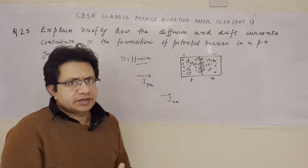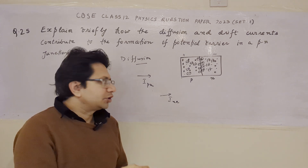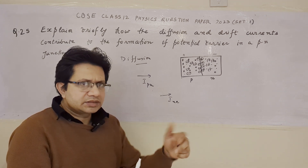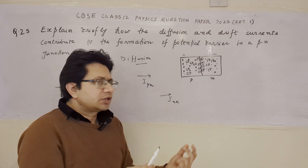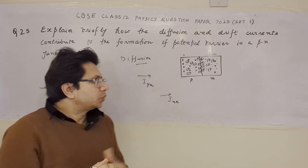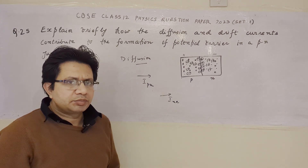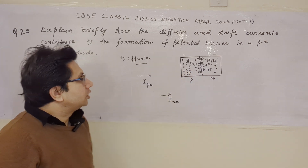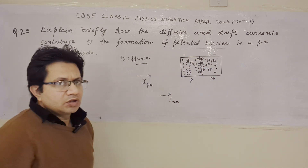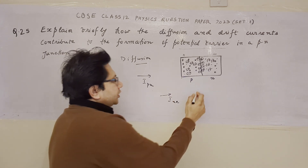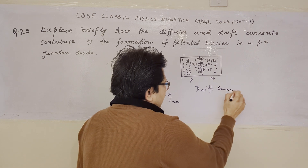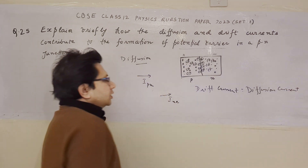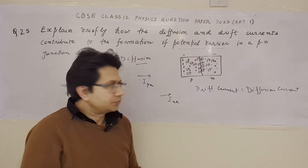The drift current is in the opposite direction to the diffusion current. The diffusion current decreases over time because the diffusion process saturates once concentration balance is achieved, while the drift current increases. A certain point is reached when the drift and diffusion currents become equal. At that particular instant, the potential barrier is created — this is known as the potential barrier, formed when drift current equals diffusion current.